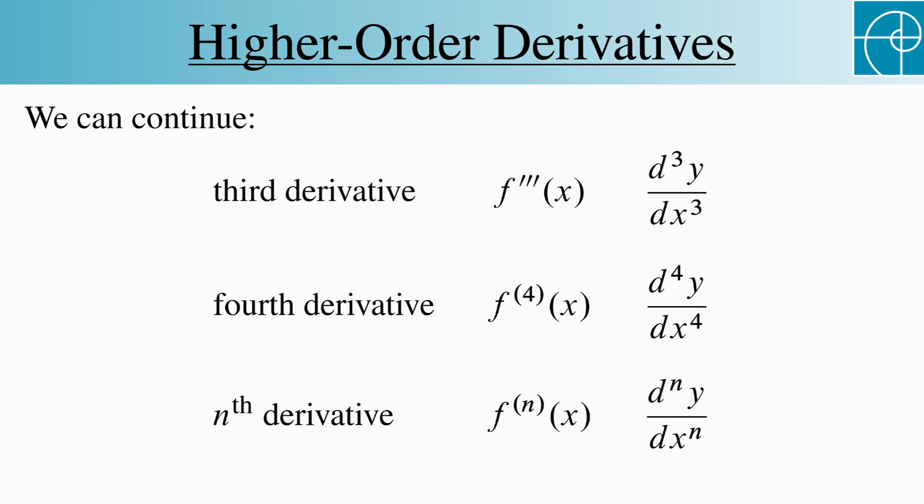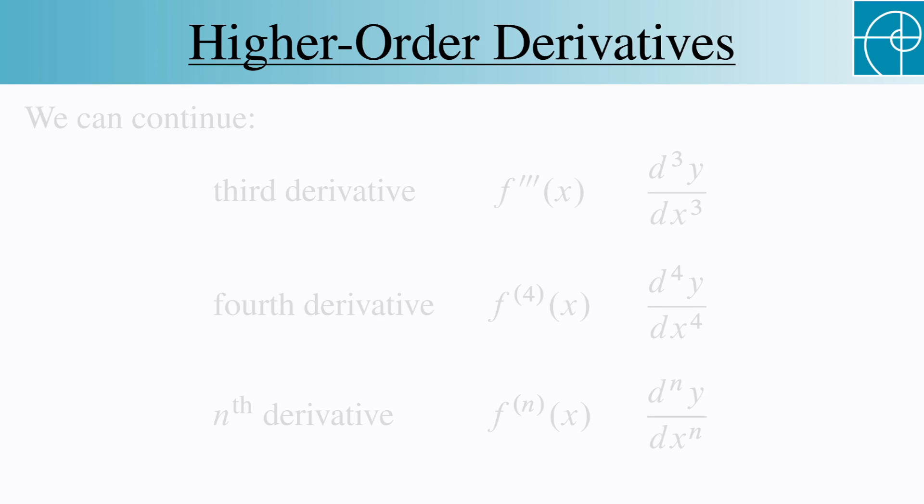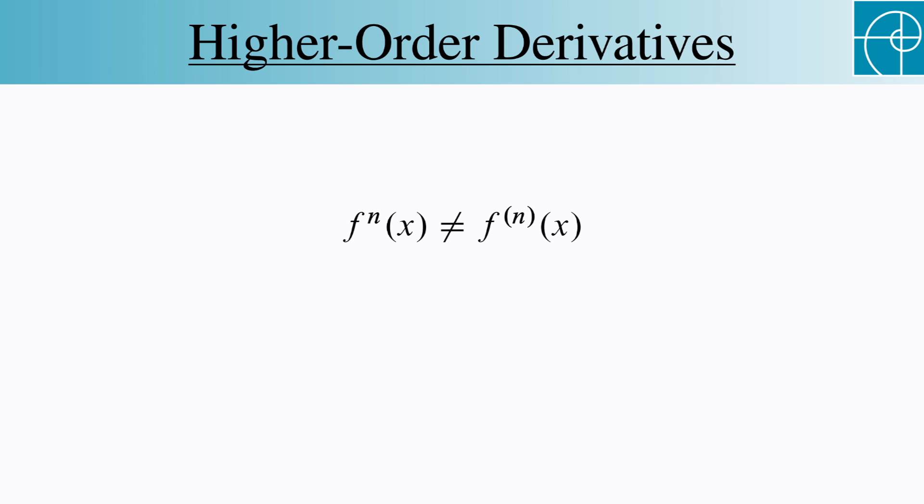Also, don't confuse the notation used here for the fourth and nth derivatives with notation for function composition. The left side, without parentheses around n, denotes function composition with n copies of f. The right side, with parentheses around n, denotes the nth derivative.